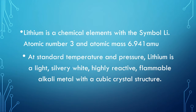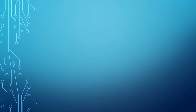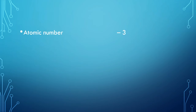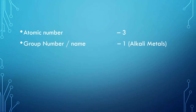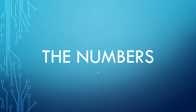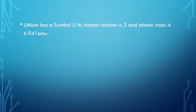In the periodic table, lithium's atomic number is 3, its group number is 1, and its group name is alkali metal. Alkali metals are elements occupying the first group — they are very reactive, electropositive, monovalent metals forming strongly alkaline hydroxides. Its period is 2, its block is s, and its electronic configuration is 1s² 2s¹.